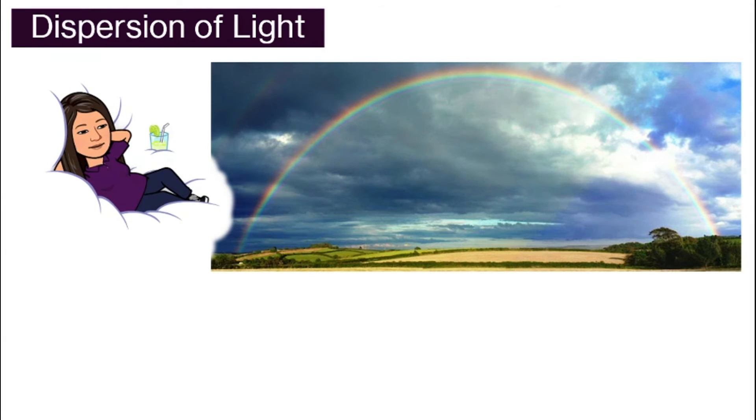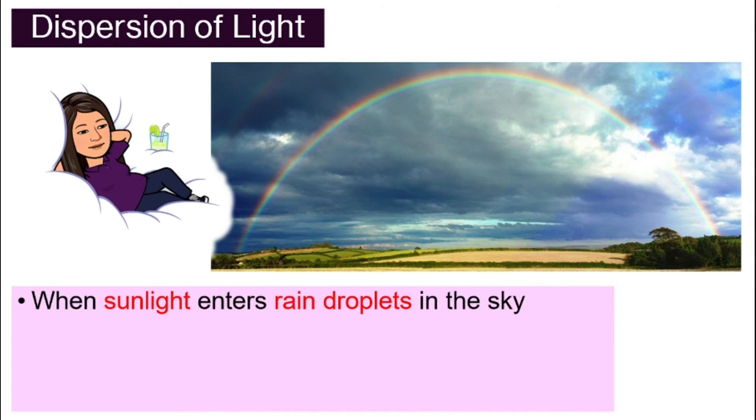Well, by now, you would have guessed how is rainbow formed? Through the dispersion of light. How did that happen though? When sunlight enters rain droplets in the sky, the rain droplets actually act just like the glass prism that we have looked at earlier.